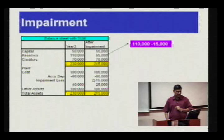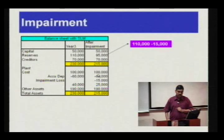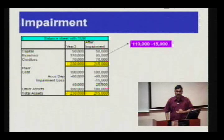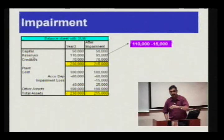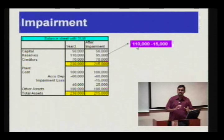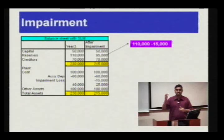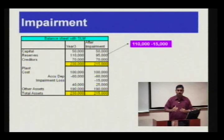If you see this, the impairment loss is reduced from the cost. So the value of the asset is cost minus accumulated depreciation minus impairment losses, and the reserves are reduced by 15,000 through the income statement. In summary: revaluation reserves, when the market value goes up, are shown in the balance sheet; impairment losses, when market value is low, are shown in the income statement.